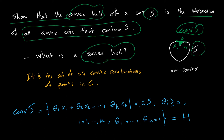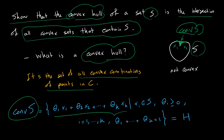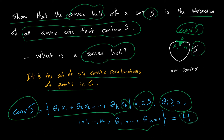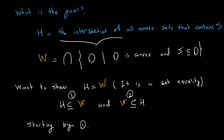Mathematically, the convex hull is defined as all convex combinations of points in S. In algebraic form, conv(S) is the set of all points that are linear combinations of points in S, where each point has to be in S, all the coefficients have to be greater than zero, and the sum of the coefficients has to equal one. I will call conv(S) as H and use H as the notation for the convex hull of S.